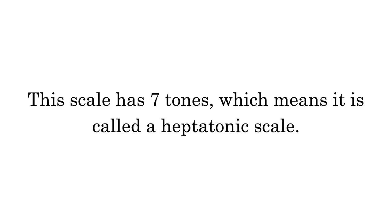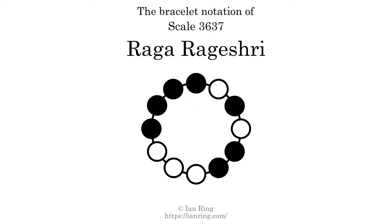This scale has 7 tones, which means it is called a heptatonic scale. This is a bracelet notation diagram of scale 3637. The shaded circles represent tones that appear in the scale, and they are read clockwise, starting at the top.